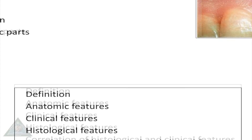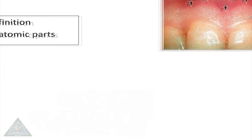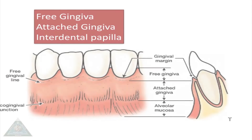Gingiva refers to the part of oral mucosa that covers the alveolar process of the jaws and surrounds the neck of teeth. Clinically, gingiva is divided into three types: free gingiva, attached gingiva, and interdental papilla.